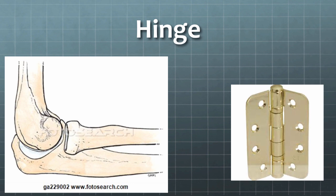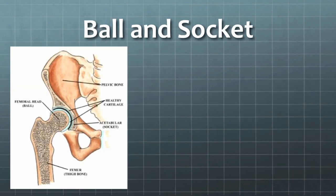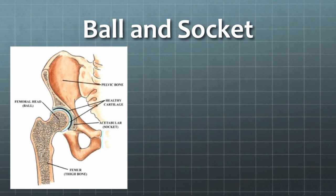A ball and socket joint has a ball that sits into a shallow cup-like socket. An example of a ball and socket joint is your hip.